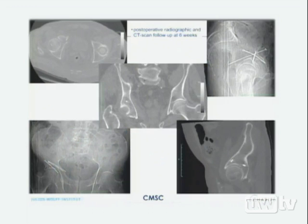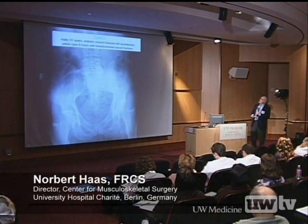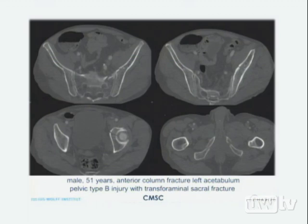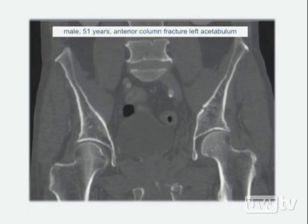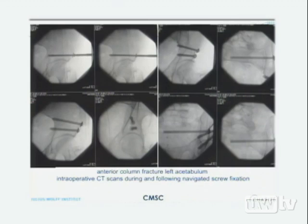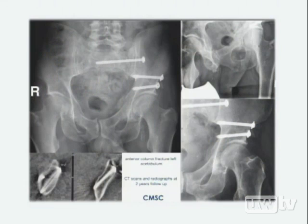After full weight bearing at six weeks, there is no displacement and reduction is maintained. The next case is a 51-year-old with an anterior column fracture and an additional pelvic C injury with transforaminal sacral fracture. Intraoperative CT scans guide step-by-step navigated screw fixation of the acetabulum, plus additional navigated SI screw fixation of the sacral fracture. Two-year follow-up shows good results, no displacement, and the patient is pain-free.